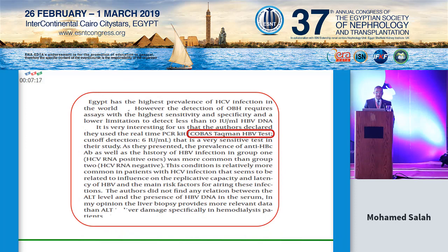Egypt has the highest prevalence of hepatitis C virus infection in the world, though hopefully it is being eradicated now. The detection of occult hepatitis B requires assays with the highest sensitivity, and the cobas-taqman hepatitis B virus test, which detects down to 6 to 10 international units per milliliter, is a very sensitive test now available.